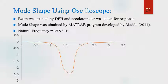The mode shape was also obtained using the conventional method with an oscilloscope. Dytran force hammer was taken as excitation and accelerometer as response. The mode shape was obtained using a MATLAB program developed by Modu in 2014. The natural frequency came out to be 39.92 Hz. The mode shape obtained using the oscilloscope is not as good as that obtained using the M+P analyzer.